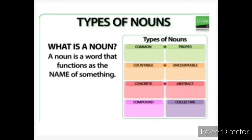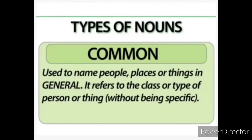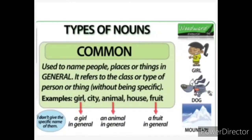First, we will go through common noun. The common noun is used to name people, places or things in general. It refers to the class or type of person or thing without being specific. For example, 'girl' comes under common noun because we are not specifying any particular name. Similarly, 'animal' — we call all animals 'animal' in general, not specifying any particular name. In the same way, 'fruit' — we are calling it a fruit in general. So common nouns like girl, animal, fruit, house — we speak in general, not a particular name.